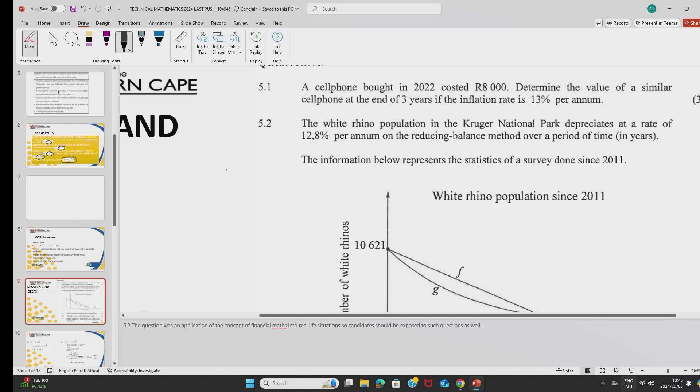For instance, in this question, the key term is inflation rate. Because inflation, we calculate questions that have got to do with inflation using a compound interest. Then you would go to your formula sheet, you write the correct formula for the compound interest, that is, A is equals to P, 1 plus I divided by M raised to N multiplied by M.